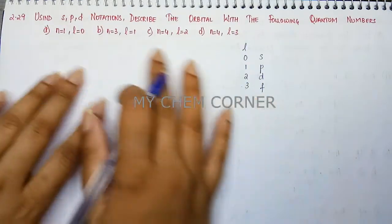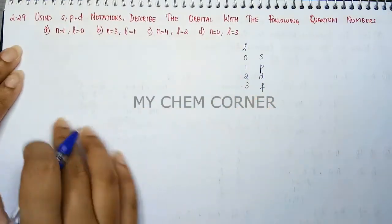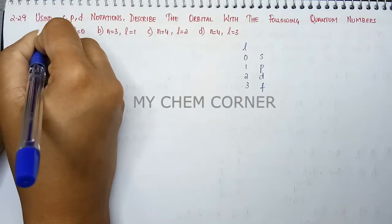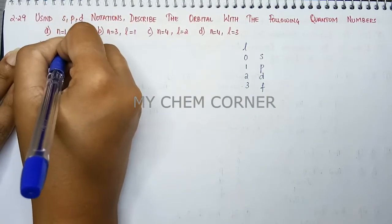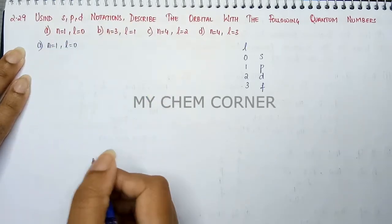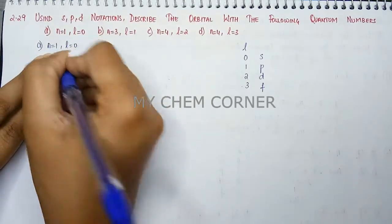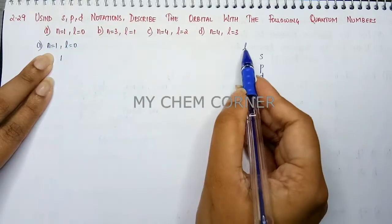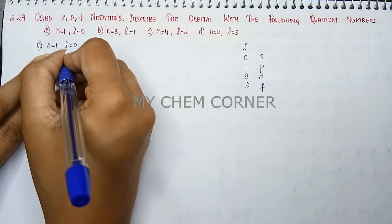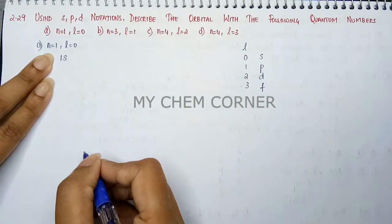So keeping this you are going to now identify the orbitals in this case. So first one here is n is equal to 1 and l is equal to 0. n is equal to 1 which is 1, l is equal to 0 you have s orbital. So this is going to be 1s orbital.